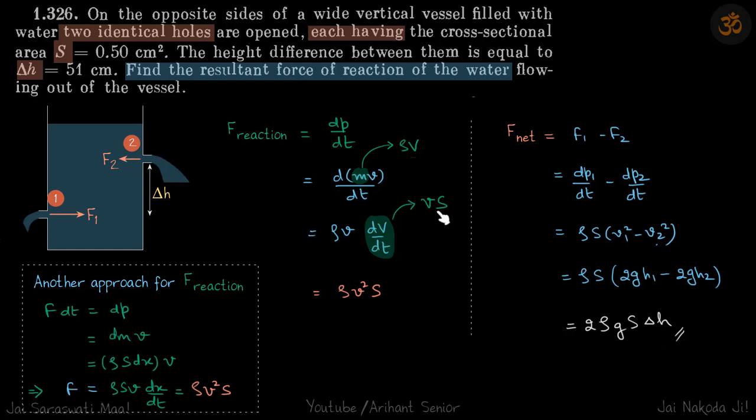Now this is one approach to calculate the reaction force. When the water is coming out with velocity V through an area S, we have seen that the reaction force is rho V square S, and we got that by doing DP by DT. The other way of doing is using impulse.